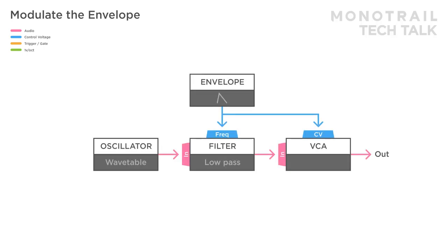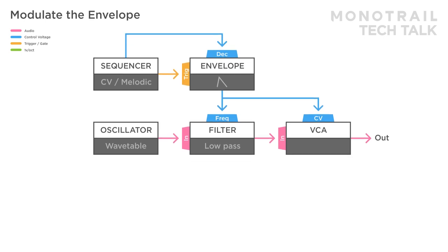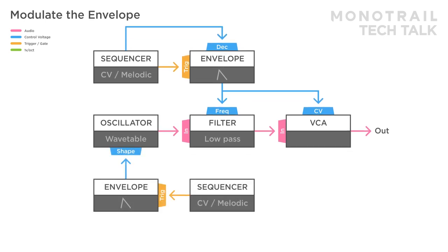Another great way to modulate an envelope is with a sequencer, especially if you like more percussive or rhythmical sounds. Here is a basic steady voice — this time the envelope is triggered with a sequencer, but the CV output of that sequencer is modulating the envelope decay. A second sequencer is triggering another envelope modulating the wave shape. This sequencer only triggers the envelope on certain steps, creating nice patterns. The CV output of that envelope is modulating the decay as well.